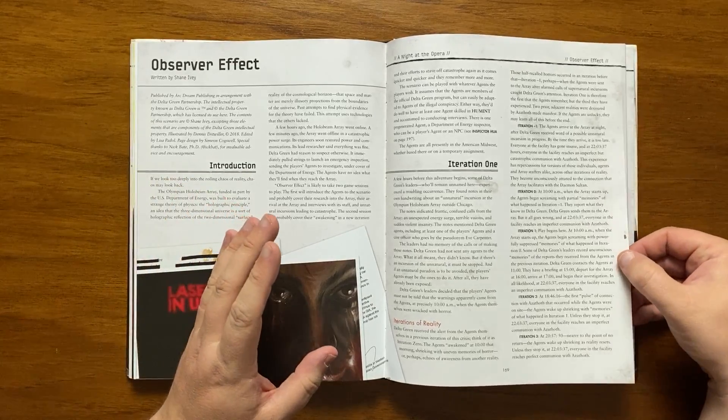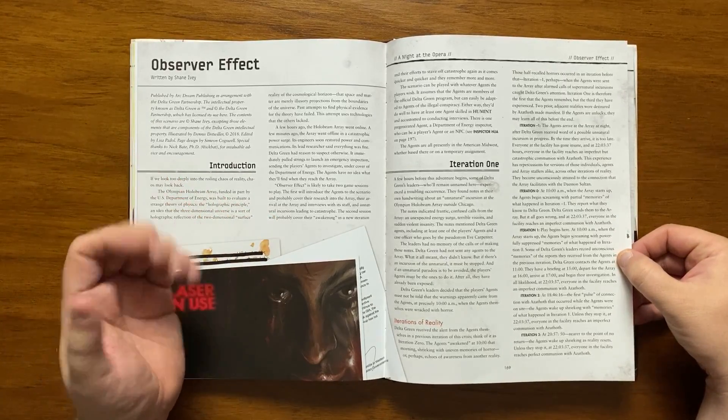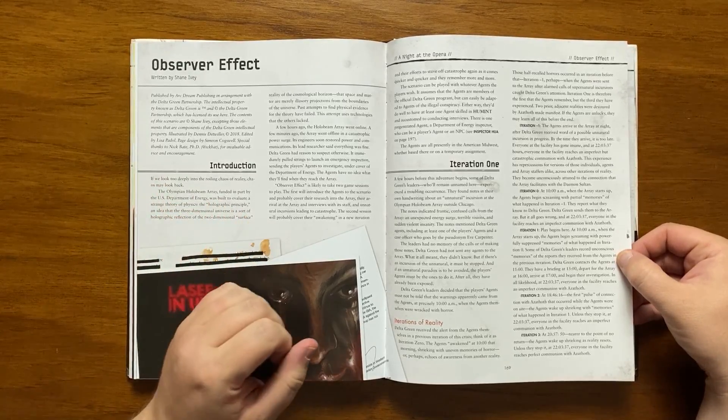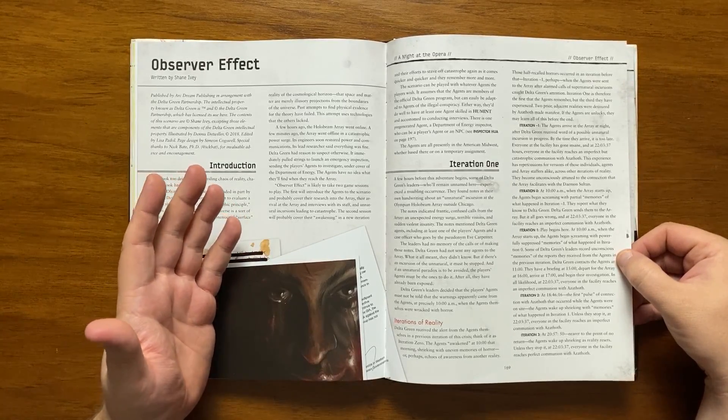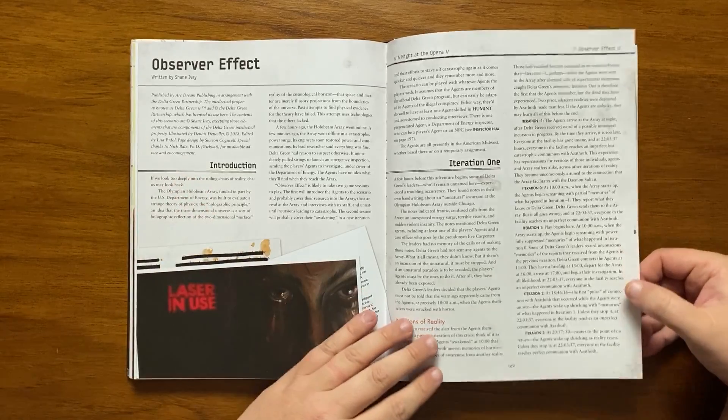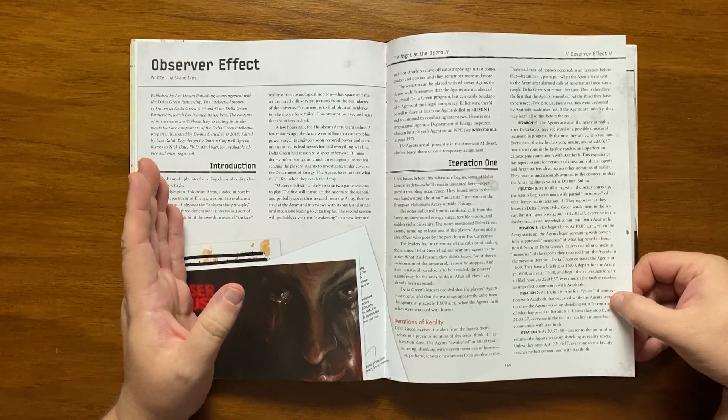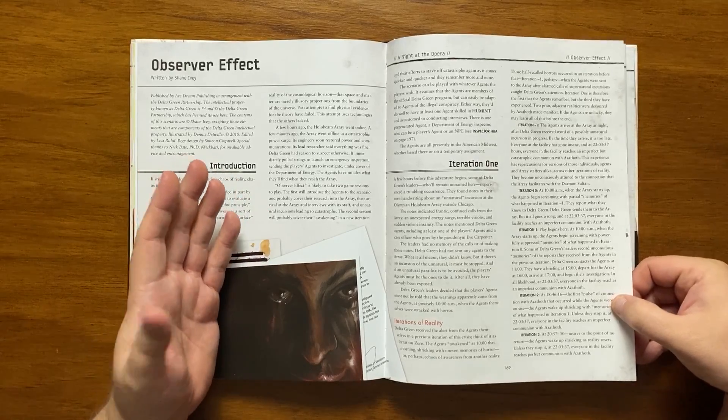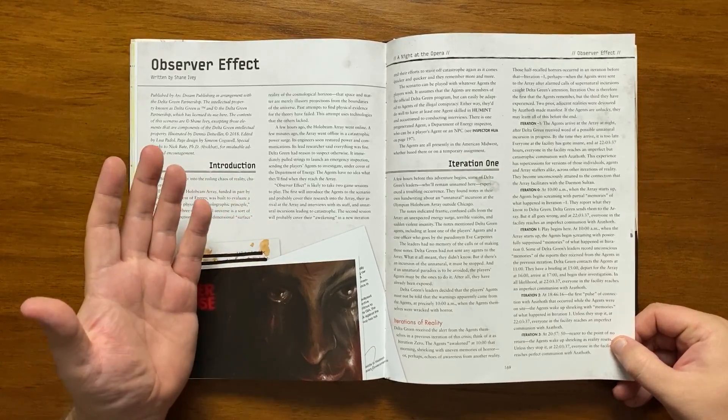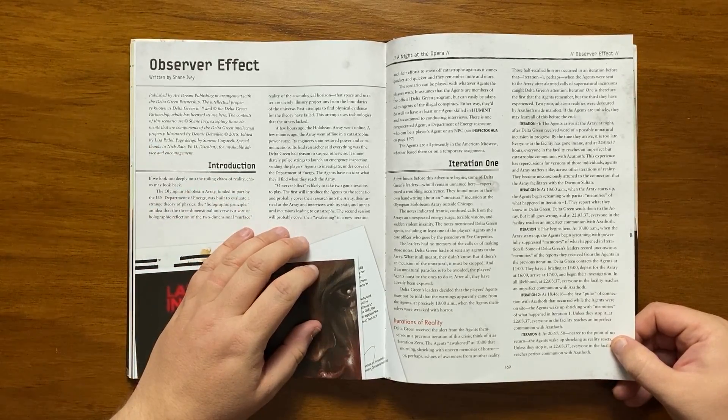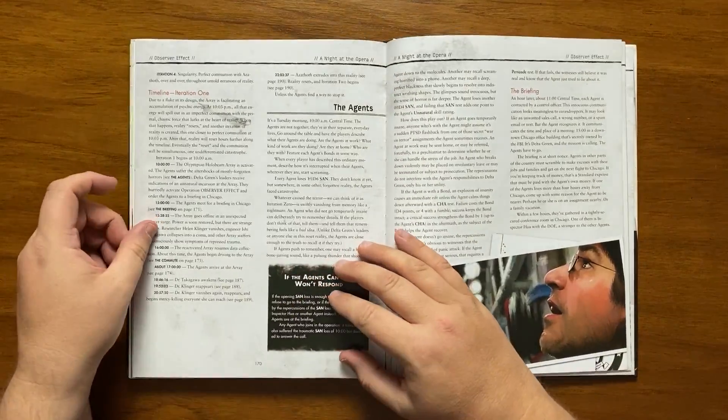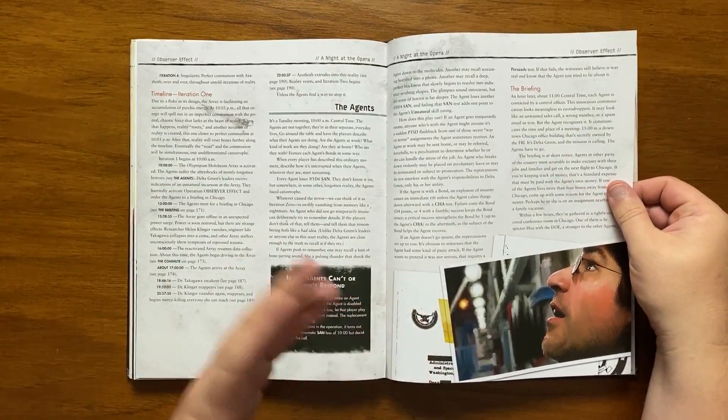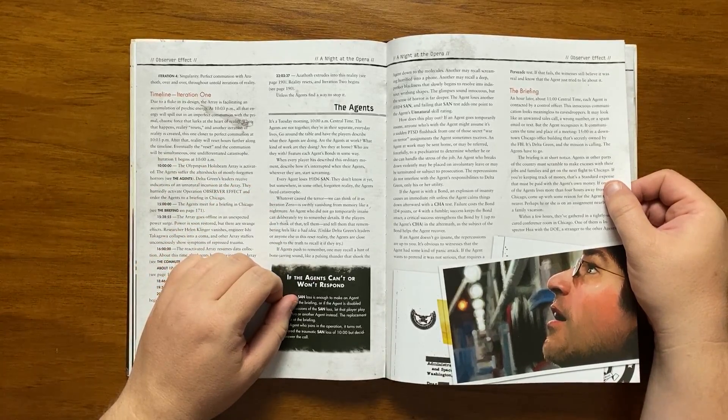Iteration 1 is where play begins with the agent being contacted at 11am. They have a 3 o'clock briefing, departing at 4 o'clock and arriving at 5 o'clock and at 2203 everything happens again. Iteration 2 is at 1846 with them waking up at the facility, shrieking with memories and everything happening again at 2203. And Iteration 3 is at 2057 as they wake up shrieking, reality reset and everything happens again at 2203. And Iteration 4 is perfect communication with the singularity of Azathoth, something that echoes through reality. That is, unless they manage to stop it happening before then.